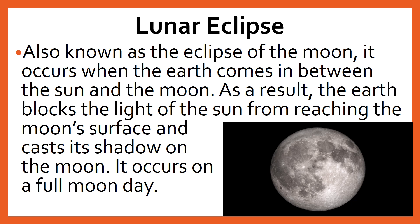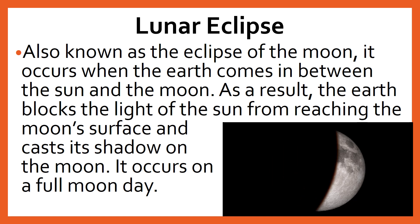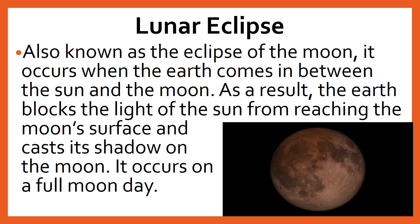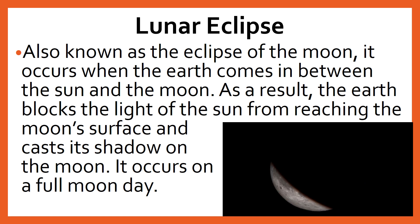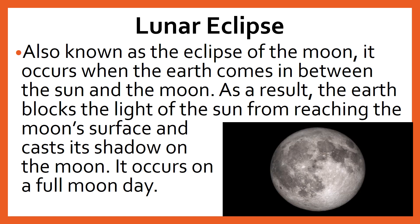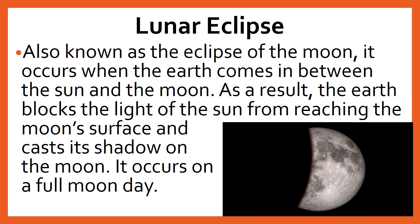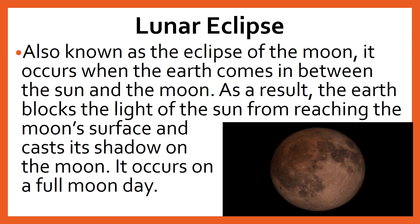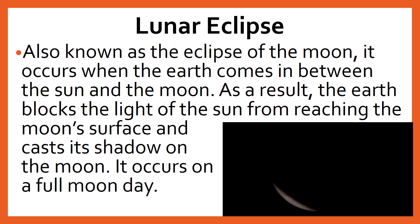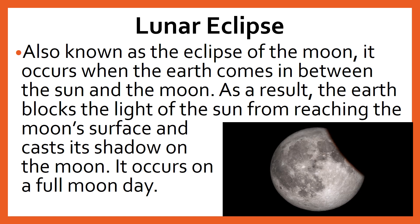Lunar eclipse, also known as the eclipse of the moon, occurs when the earth comes in between the sun and the moon. As a result, the earth blocks the light of the sun from reaching the moon's surface and casts its shadow on the moon. It occurs on a full moon day. We can observe up to three lunar eclipses per year.